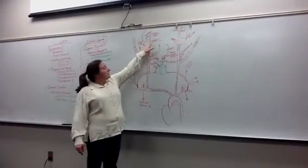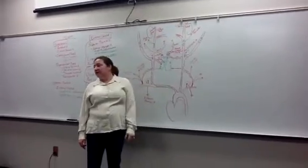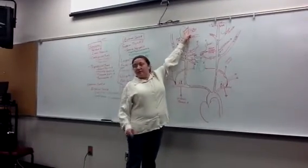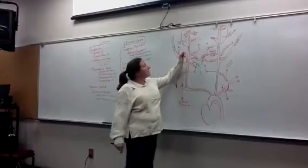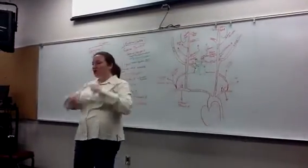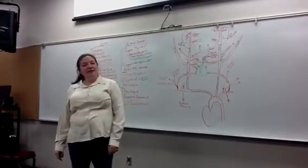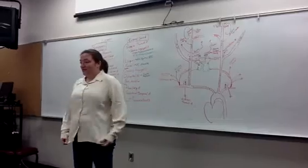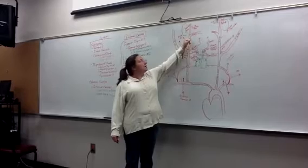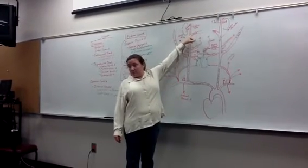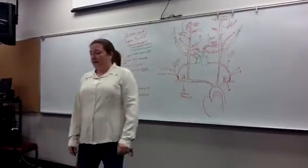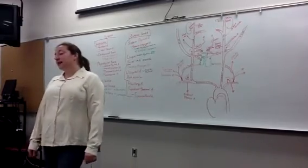Finally, the external carotid branches into the maxillary artery, which enters the infratemporal fossa and gives off many branches you need to know for the final. And the superficial temporal, which heads up right in front of the ear on top of the temporalis muscle, giving off a small branch crossing the zygomatic arch called the transverse facial. The external carotid ends where it branches into the maxillary and superficial temporal. All the branches off the maxillary will be covered for the final exam.